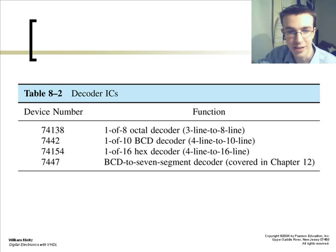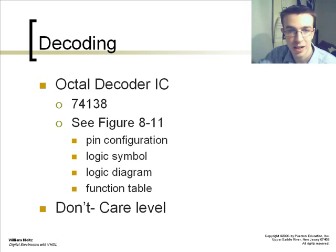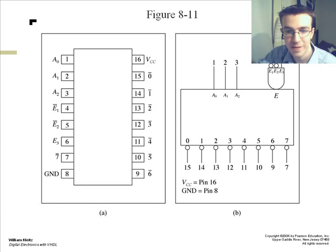These are some values for your decoder ICs. The most commonly used that we will use is either the 74138 or the 74154, the 1 to 16 hex decoder. This is the pin configuration for the 74138.